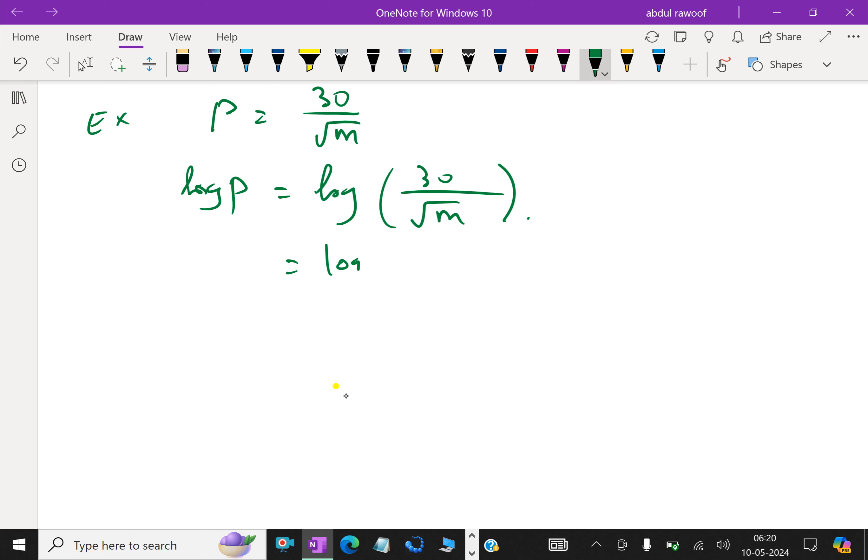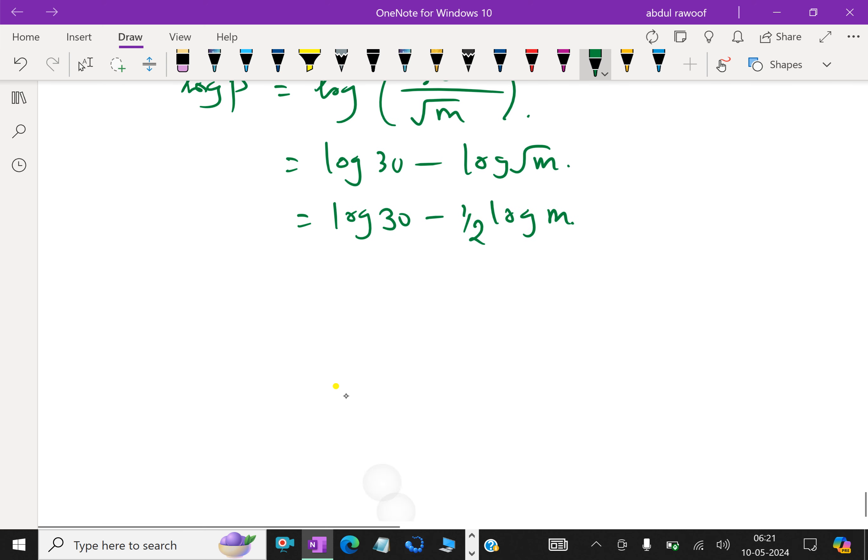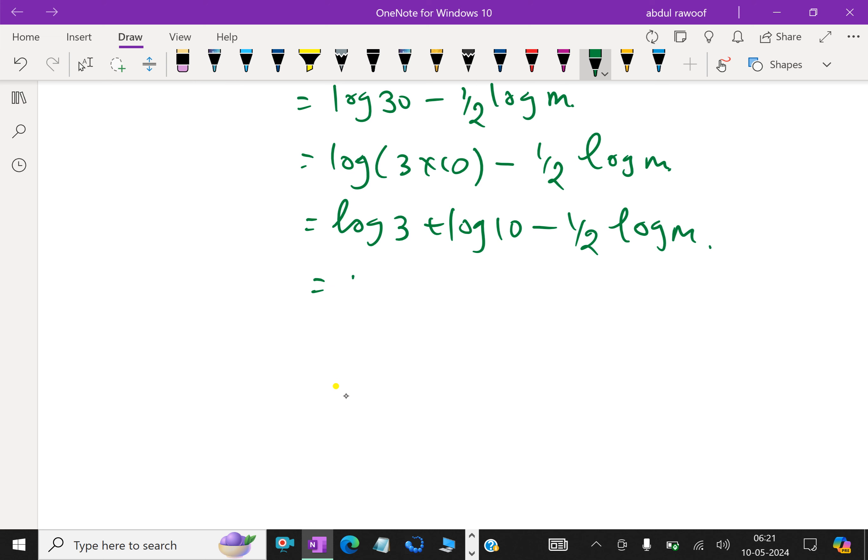Log P equals log of 30 over root of m, which equals log 30 minus log of root m. This is further equal to log 30 minus half log m, since root m is m to the power half. Log 30 can be written as log of 3 times 10 minus half log m, which equals log 3 plus log 10 minus half log m. Since log 10 is 1, this equals 1 plus log 3 minus half log m.